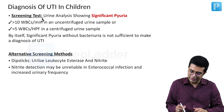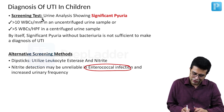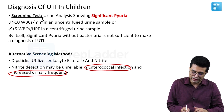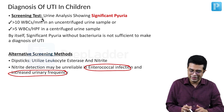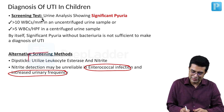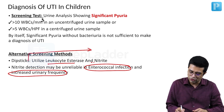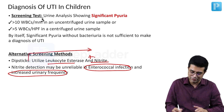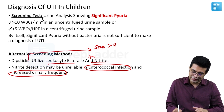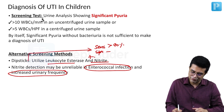Nitrite reduction is unreliable in two scenarios: enterococcal infection and increased urinary frequency. Dipstick-based methods that employ both leukocyte esterase and nitrite together have a sensitivity of more than 90 percent and specificity somewhere in the range of 70 to 85 percent.